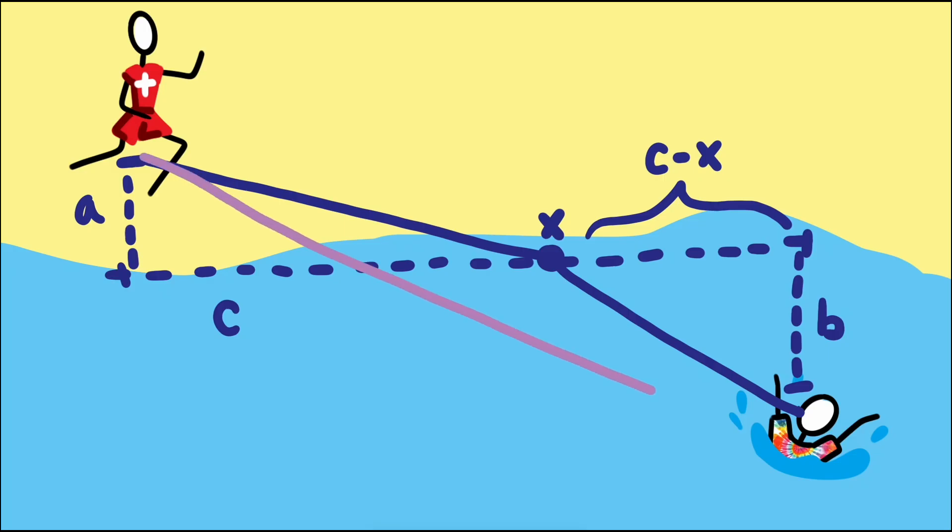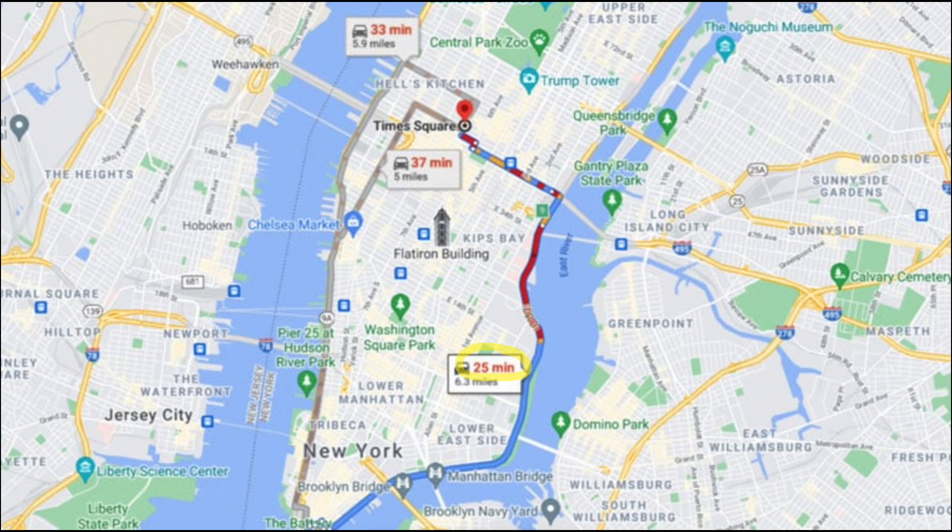For the lifeguard, the shortest path would be a straight line, but since our lifeguard speed will not be consistent for the entire trip, it's not the distance we want to minimize, but the time, which is not always the route with the shortest distance.